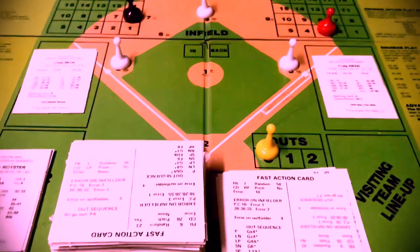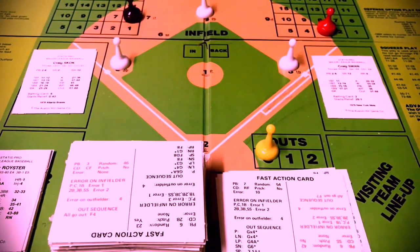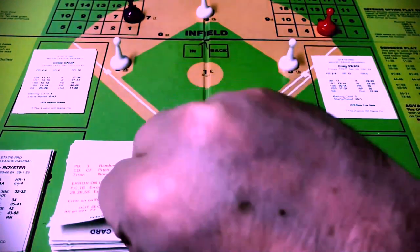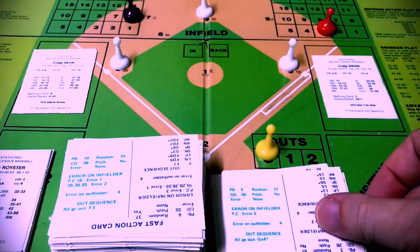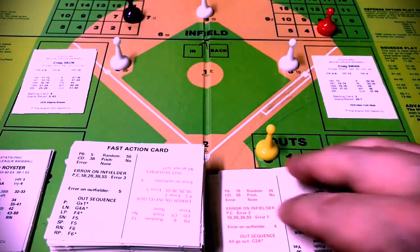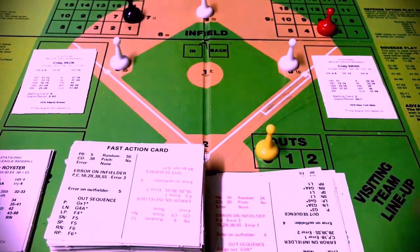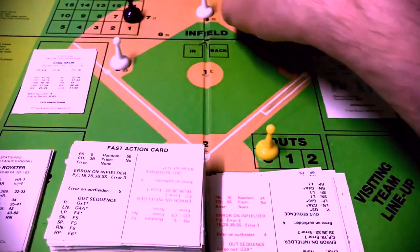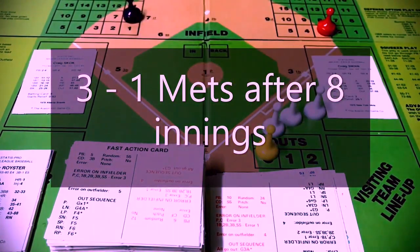Doug Flynn is up — they'll just let him hit. He gets an eight and an 81 — on his own card — and it is an out. He is an RN — all go G4X. No error, but let's see if it's a double play — yes, it was a double play. They're out of the inning, but the Mets did score a run. It's now three-to-one.